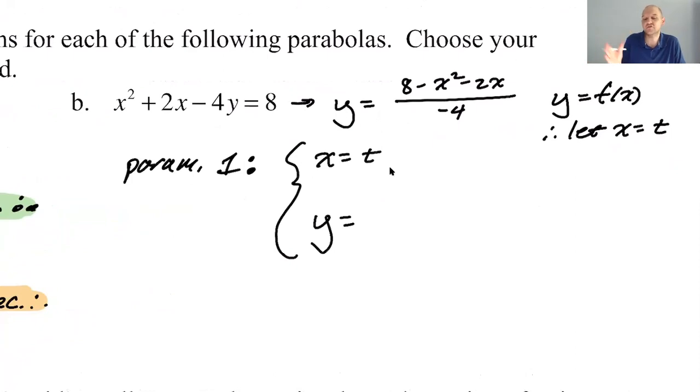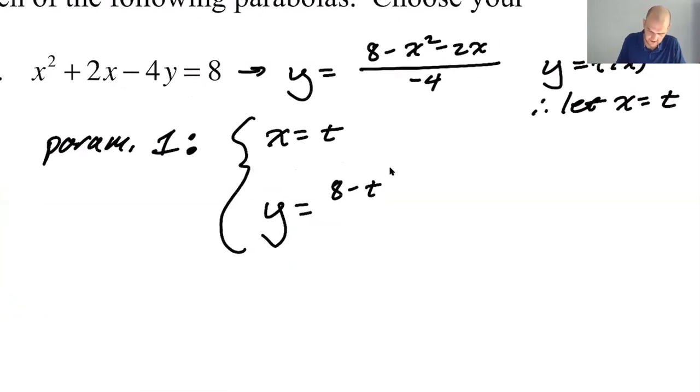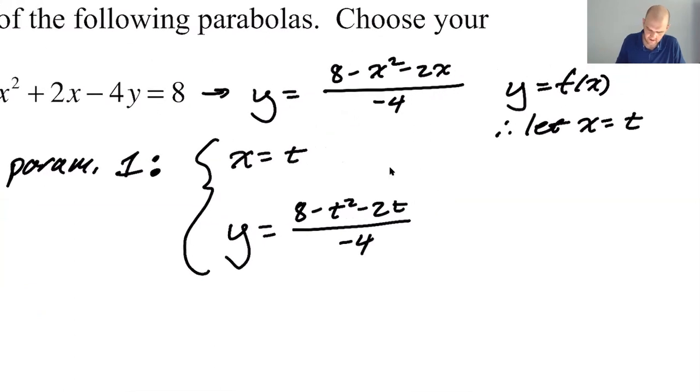And then Y doesn't have a choice. So X, if T increases by one, X increases by one. If T increases by 20, X increases by 20. It's just like a very linear relationship. Y has to do whatever it needs to do to keep you on this parabola. So it's got to do 8 and then minus T squared minus 2T divided by negative 4. You could distribute the negative into the numerator if you prefer, which is actually probably easier to deal with.